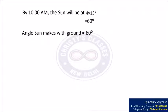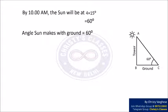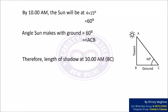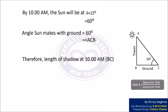We can depict this with a figure. The sun is positioned such that angle ACB with the ground is 60 degrees, and the tower AB makes a 90-degree angle with the ground. The shadow is BC. Using tan(angle) = opposite/adjacent, we get BC = AB / tan(60°) = AB / √3.